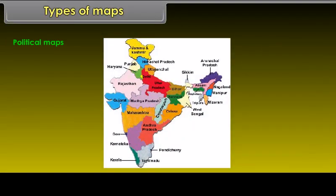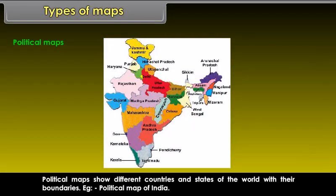Political Maps show different countries and states of the world with their boundaries. Example: Political Map of India.